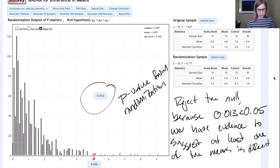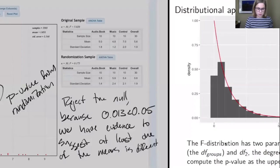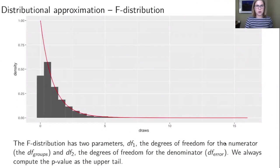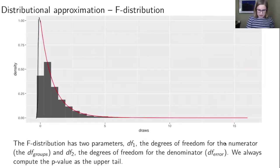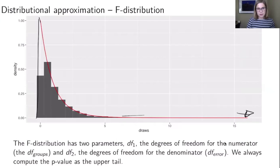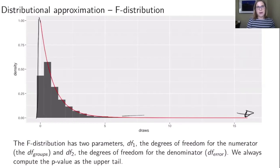The other way to find the p-value is to use a distributional approximation — specifically the F distribution. It looks similar to the randomization distribution we just saw: a distribution that is truncated at zero and falls down in a long right tail, somewhat like the t distribution. Just as the t distribution requires specifying degrees of freedom, the F distribution has two parameters: df1, the degrees of freedom for the numerator (from the groups), and df2, the degrees of freedom for the denominator (from the error). Because of the shape of the distribution, we always compute the p-value as the upper tail — it's always a right tail.